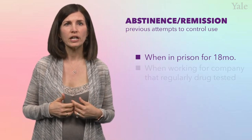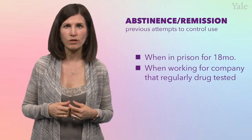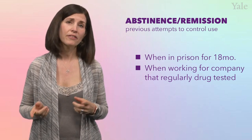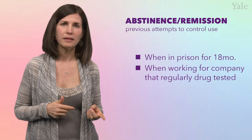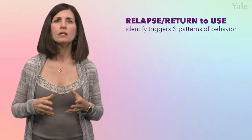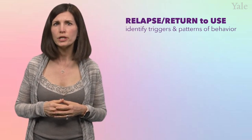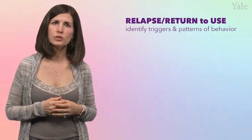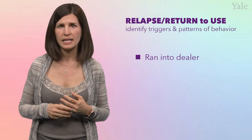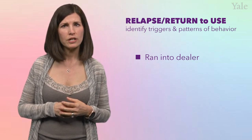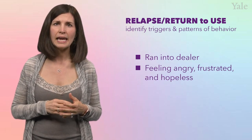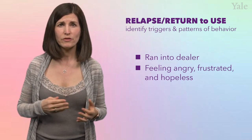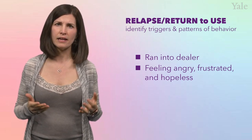You also know that while working for a company that regularly tested her, she didn't use even once. Now this was prior to her addiction developing, but it's information to consider nonetheless. So now we're at our last letter of rip-tear, which is R for relapse and return to use. In Annabeth's case, you want to know what happened after prison. She tells you that she relapsed to cocaine when she ran into her dealer a few months after her release. Annabeth also shares that at that time, she was feeling angry, frustrated, and hopeless after being turned down again and again for job opportunities.